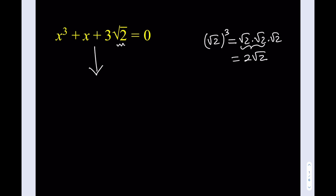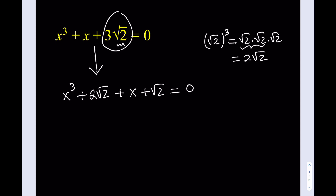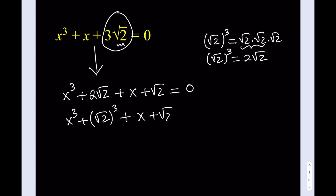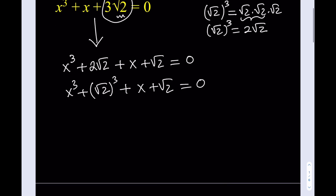I'm going to break it down into x cubed plus 2 times the square root of 2, plus x plus the square root of 2, equals 0. What I did was take the constant term and break it apart. The good thing is that 2 root 2 can actually be written as square root of 2 to the third power. If you see what I see, you should be seeing a sum of two cubes: x cubed plus square root of 2 cubed.